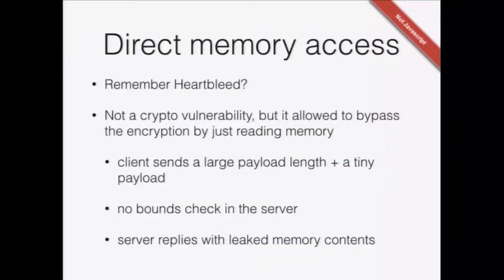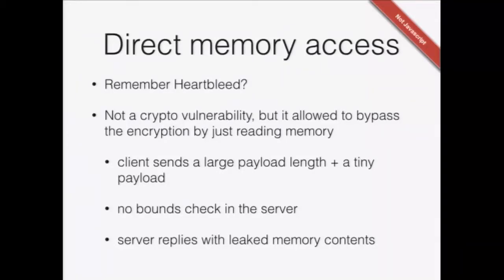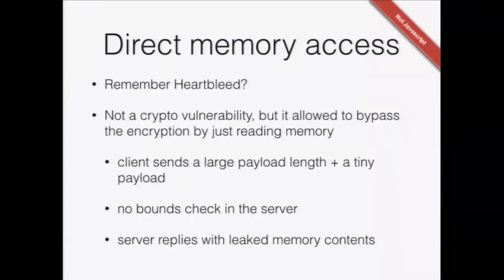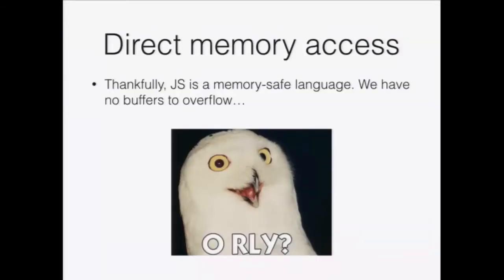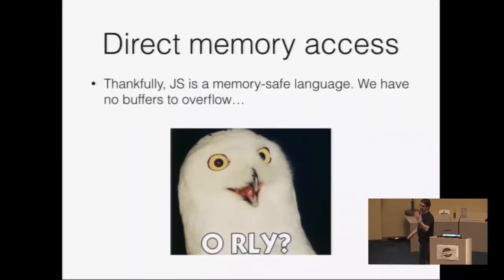There's also the case of direct memory access. You all probably remember Heartbleed. It wasn't a crypto vulnerability — it was a stupid lack of bounds checking. But the results were critical to crypto: you had what you thought was an encrypted channel providing confidentiality, but the attacker could access raw memory before decryption, extracting request parts — and some even claimed keys could be extracted. Memory corruption vulnerabilities are common in C. Luckily, JavaScript is a memory-safe language — there are no buffer overflows in JavaScript. Or really? Well, not really.